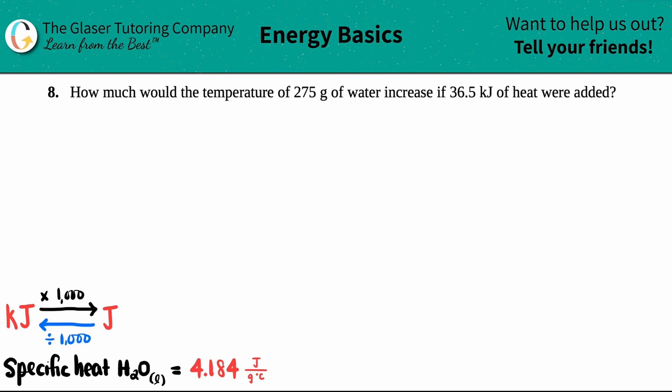Number eight, how much would the temperature of 275 grams of water increase if 36.5 kilojoules of heat were added?